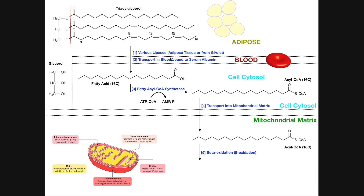In the blood, free fatty acids are picked up by a protein called serum albumin. Albumin is the major protein in the blood that carries fatty acids. It carries these fatty acids liberated from adipose tissue to cells that can metabolize them — the heart and skeletal muscle cells are good examples.